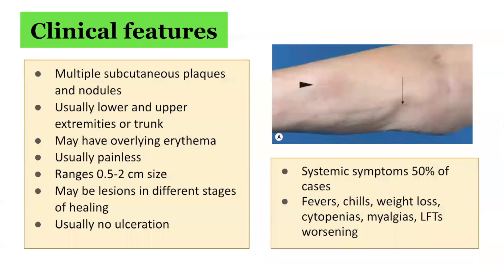In terms of the clinical features of subcutaneous panniculitis-like T-cell lymphoma, these can present with multiple subcutaneous plaques and nodules. It is usually on the lower and upper extremities of the body or the trunk. There may be some overlying erythema. It is usually painless and the lesions range from 0.5 to 2 centimetres in size. There may be multiple lesions in different stages of healing. Typically, there is no ulceration associated with the lesions.